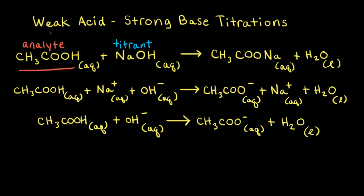Acetic acid is an example of a weak acid and sodium hydroxide is an example of a strong base. If we are titrating a sample of acetic acid with sodium hydroxide, acetic acid would be the analyte — the substance that we are analyzing — and sodium hydroxide would be the titrant.